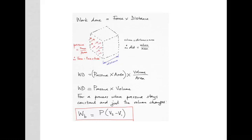Going back to basics: work done is force times distance. Considering that pressure is force over area — so force equals pressure times area — and volume equals distance times area, the distance moved equals volume over area. So work done equals force times distance, which is pressure times area times volume over area. The areas cancel out, leaving us with pressure times volume.